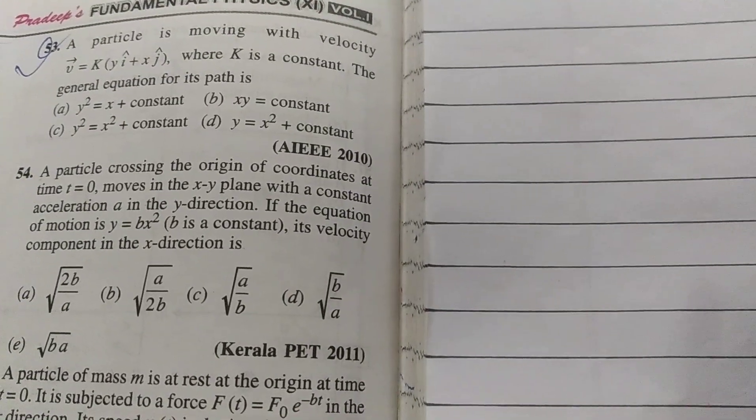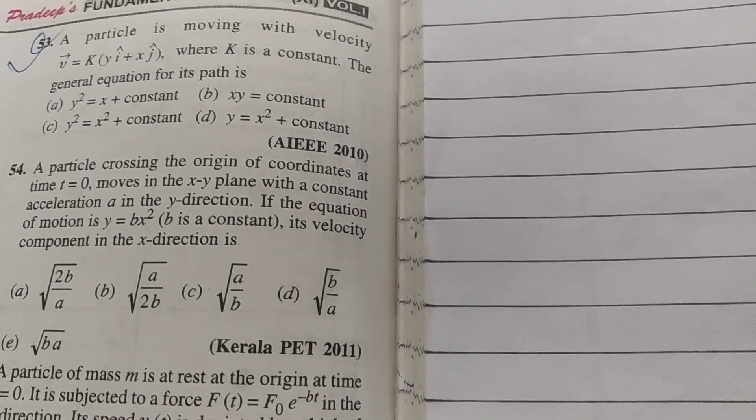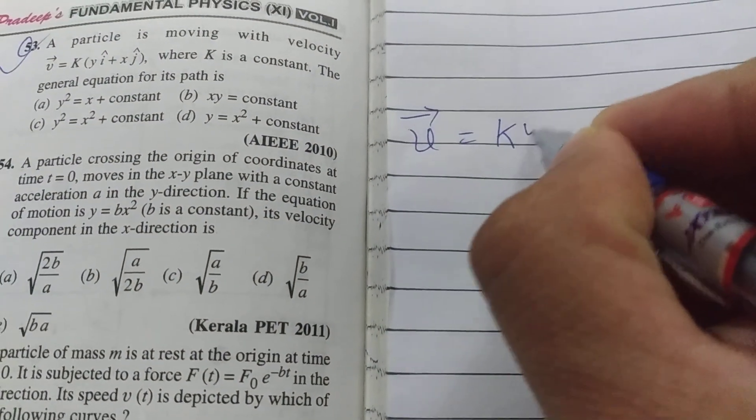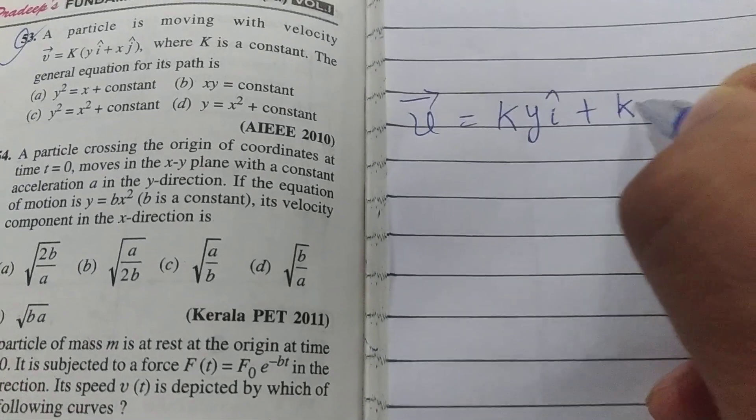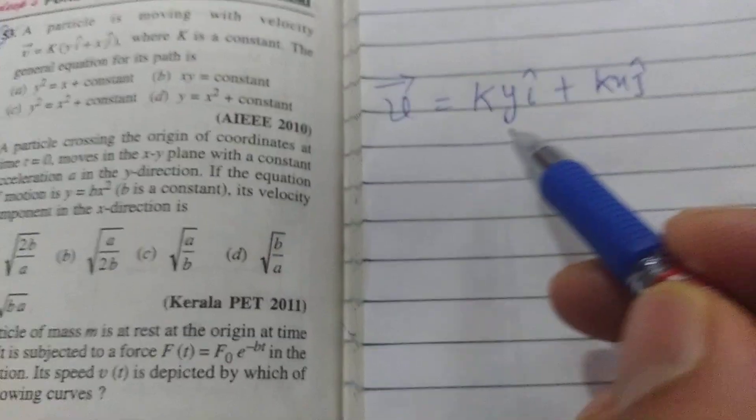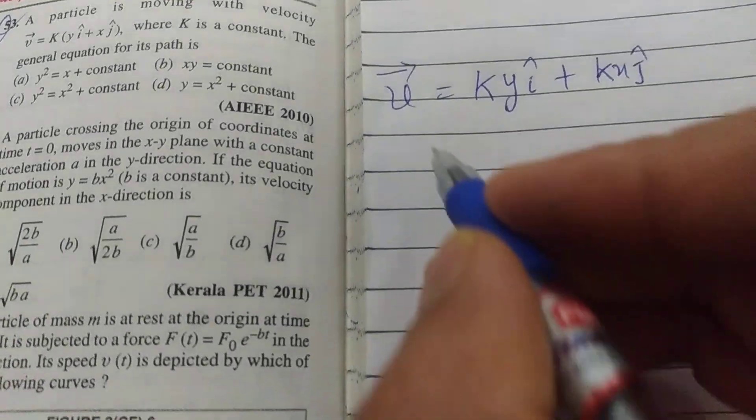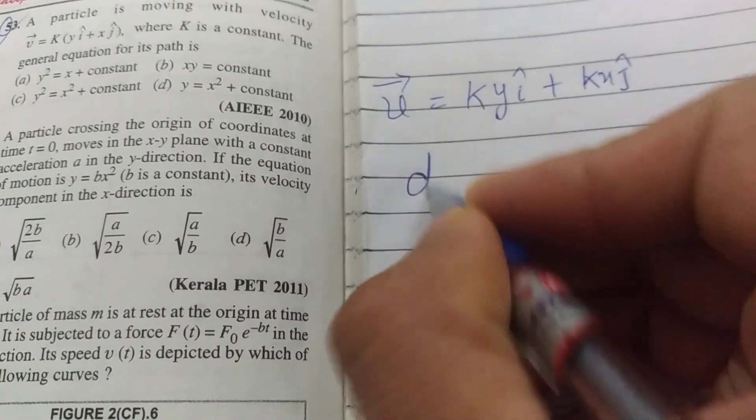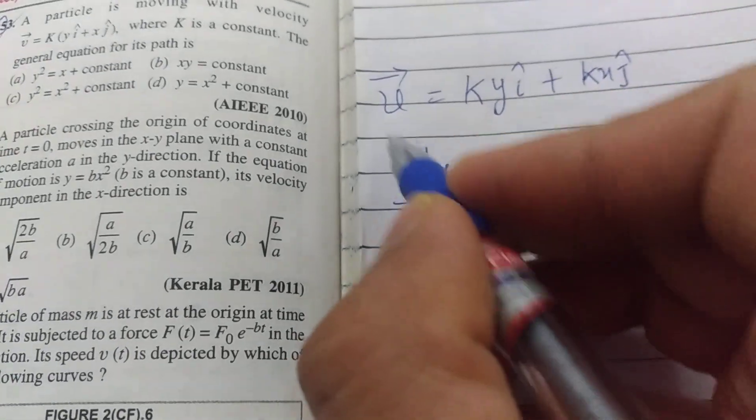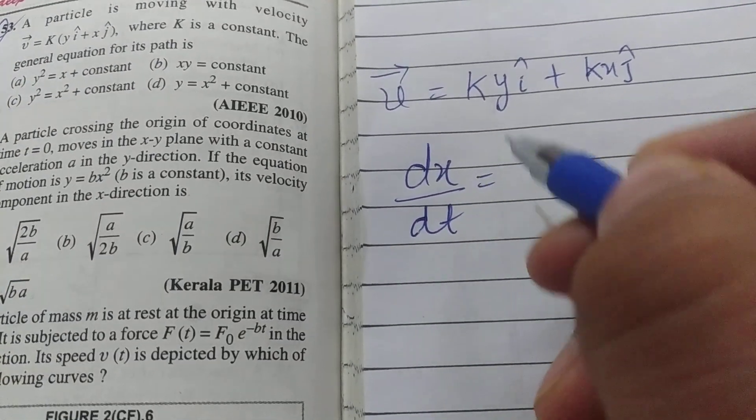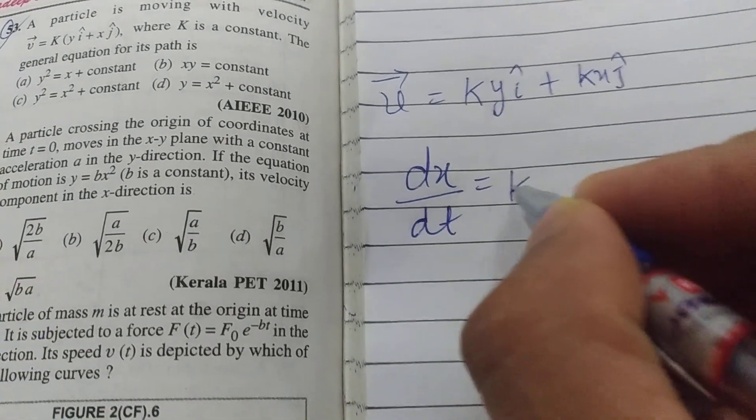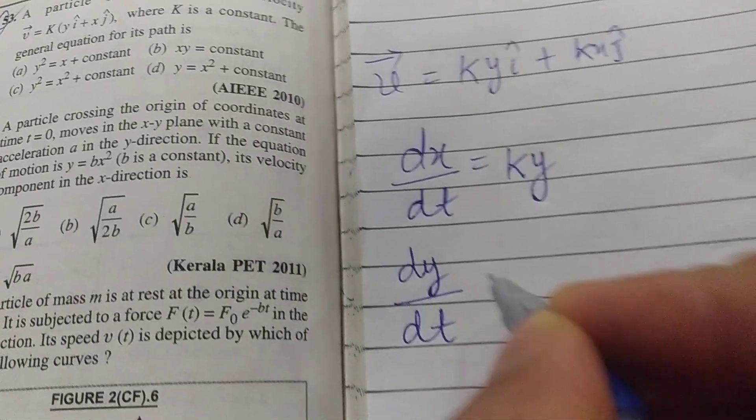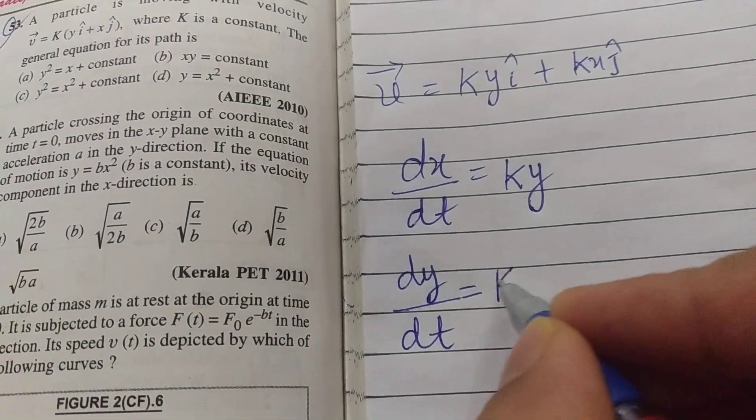We have to write the path equation relating x and y coordinates. V vector equals k y i cap plus k x j cap. We need to identify the x and y components. We can write velocity as dx by dt or dy by dt. The x component of velocity is dx by dt equals k into y, and the y component dy by dt is k x.